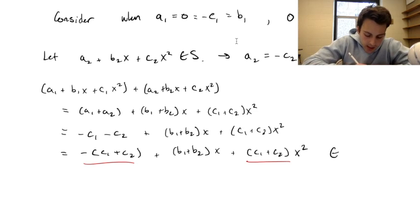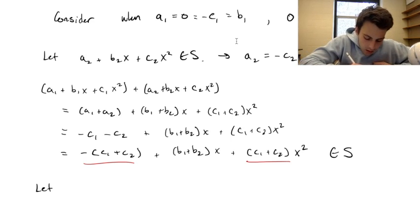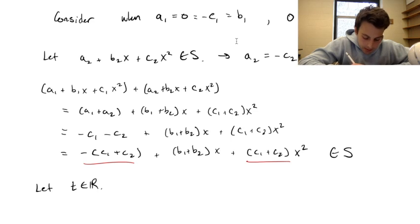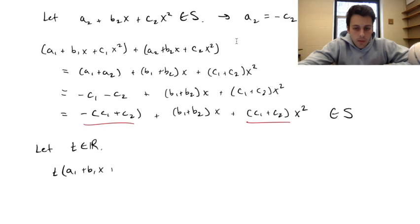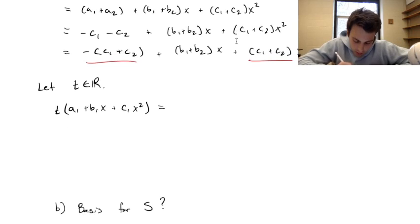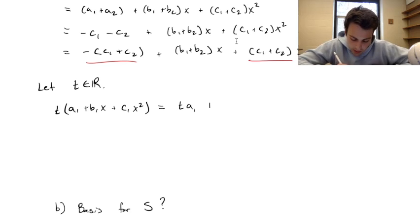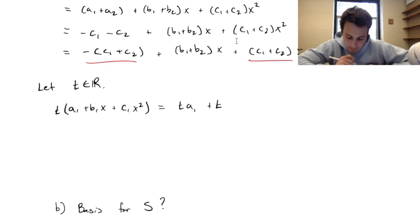Next we need to multiply a polynomial in S by a scalar and see if it is also going to be in S. This is just going to be t·a1 plus t·b1·x plus t·c1·x².